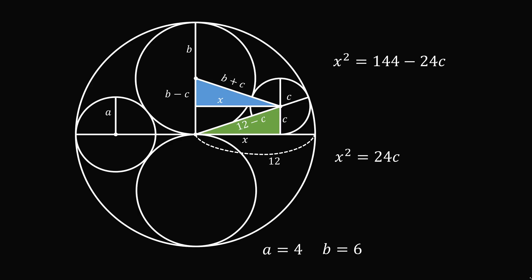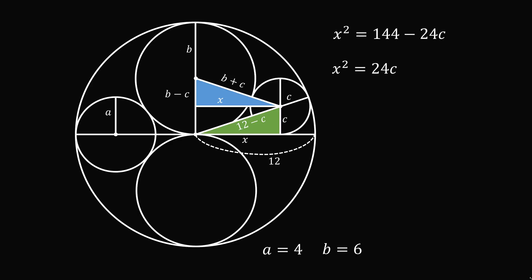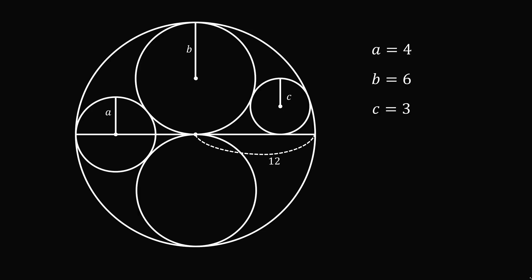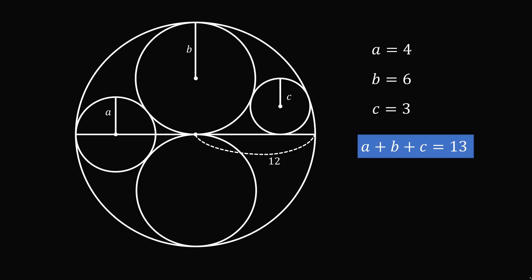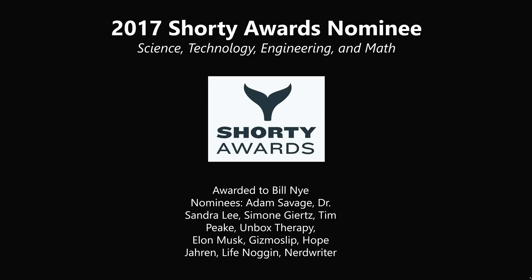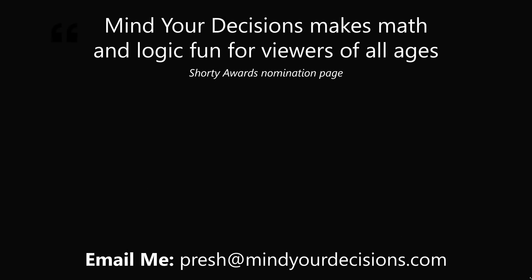We can now set these two equations equal to each other: 24c is equal to 144 minus 24c. Simplifying gives that c is equal to 3. So, we've solved for the values of a, b, and c, and this gives that a plus b plus c is equal to 4 plus 6 plus 3, which gives the answer of 13. Thanks for making us one of the best communities on YouTube. See you next episode of Mind Your Decisions, where we solve the world's problems one video at a time.